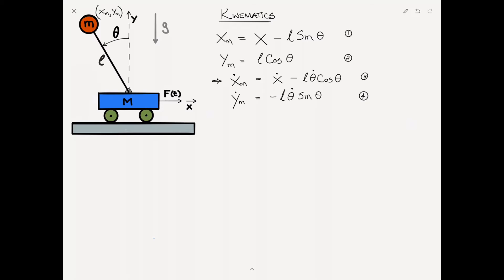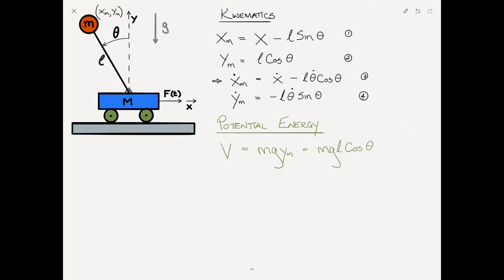In order to use Lagrange's equations to find the equations of motion, we need to find the kinetic and potential energies of the system. I'm going to find the potential energy first, because it's dead simple. Potential energy, which we'll call V, is just equal to little m times G times the height of the pendulum. We assume the cart is at zero potential energy, and the only potential energy in the system is due to the height of the pendulum bob, which is m times G times Y sub m. Substituting from equation 2, this gives V equals m G L cosine of theta. Call that equation 5.